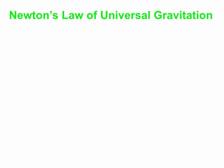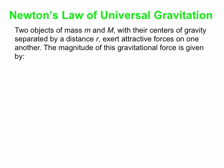Okay, so Newton's Law of Universal Gravitation. This is how it goes. We have two objects with mass lowercase m and uppercase M. Their centers of gravity are separated by some distance r. They exert attractive forces on one another via the force of gravity. Each object exerts the same force on one another. The forces are equal and opposite. Newton's Third Law still works here.